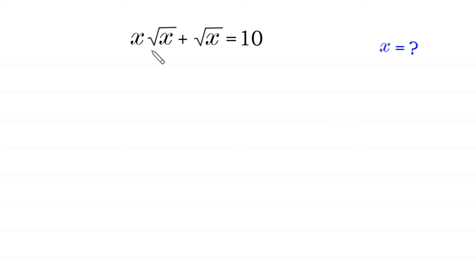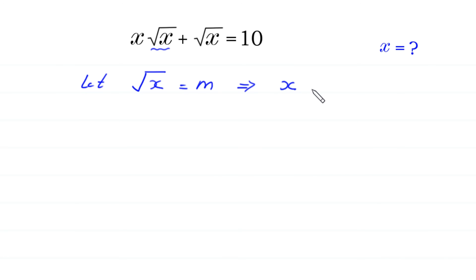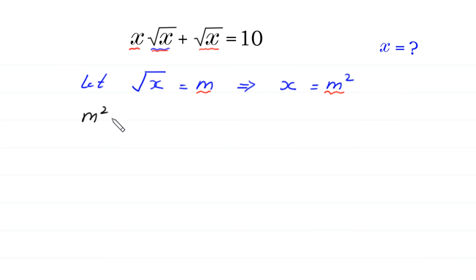First of all, we suppose that square root of x is equal to m. Let square root of x equal m, and if we take a square of both sides, this implies x is equal to m squared. Now we substitute m squared in place of x and m in place of square root of x. Then this equation becomes m squared times m plus m is equal to 10.